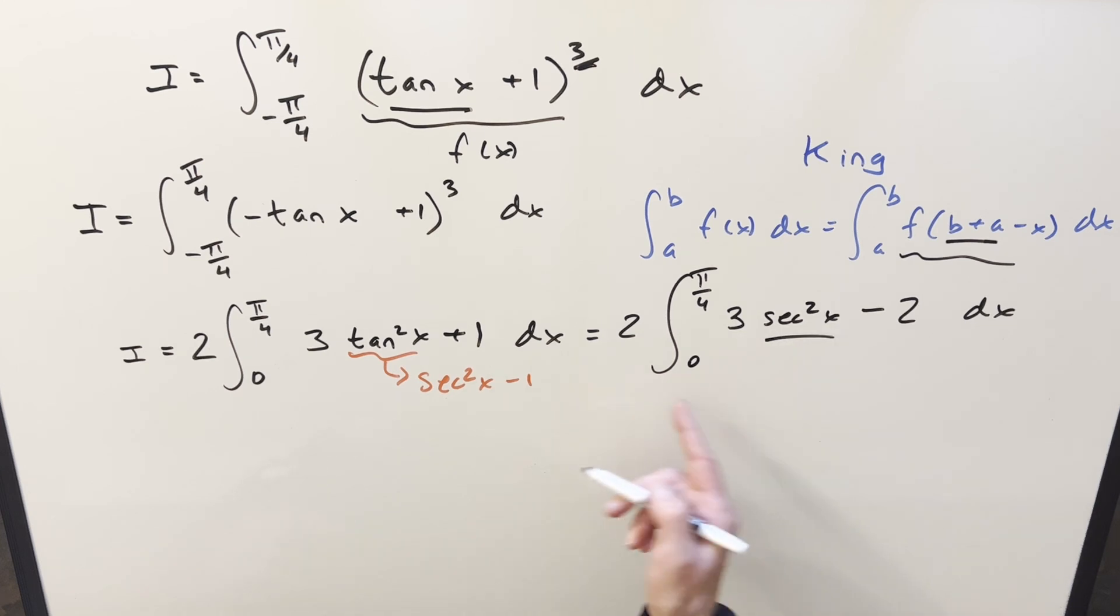Go ahead and integrate. Multiply the 2 in here, so this is going to become a 6 out front. Integral of secant squared is going to be tan x. Next, distribute in the 2 minus 2. This is going to be minus 4x. You just need to evaluate from 0 to pi over 4.